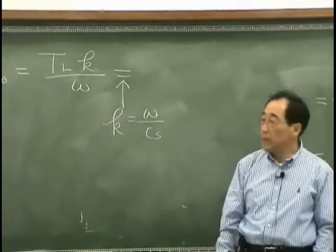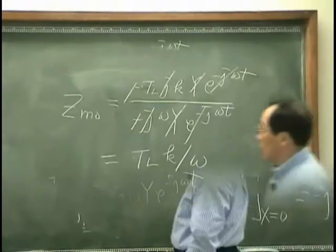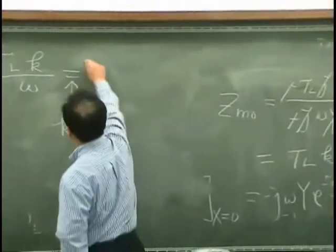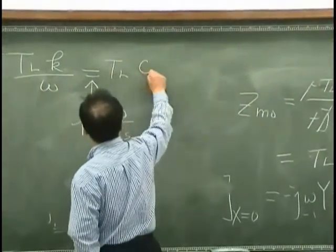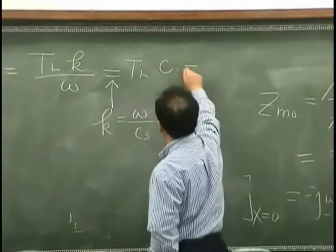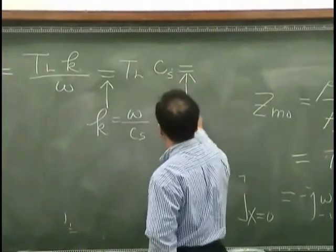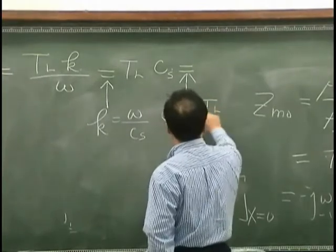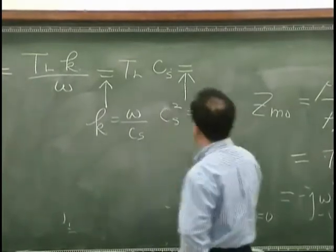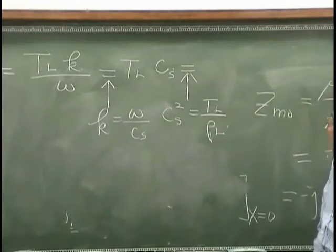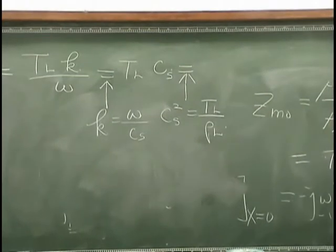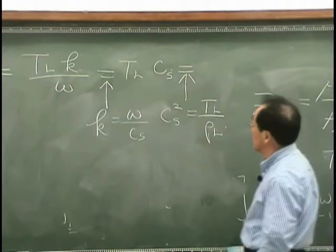So what is this? That is TLC, and also we know that speed of propagation of a string is TL over ρL, which is TL over C.